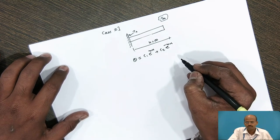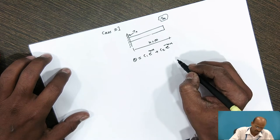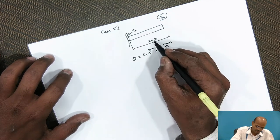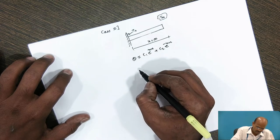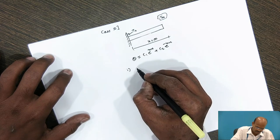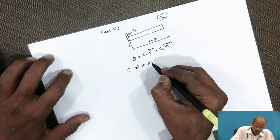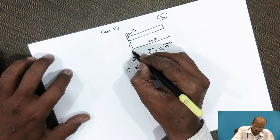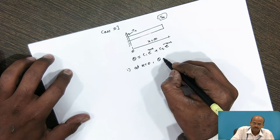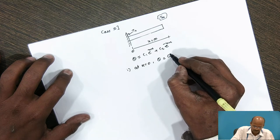In the last session, we derived this general heat conduction equation. Now for infinitely long fin, the boundary conditions are: first boundary condition — at x = 0, θ = θ₀.